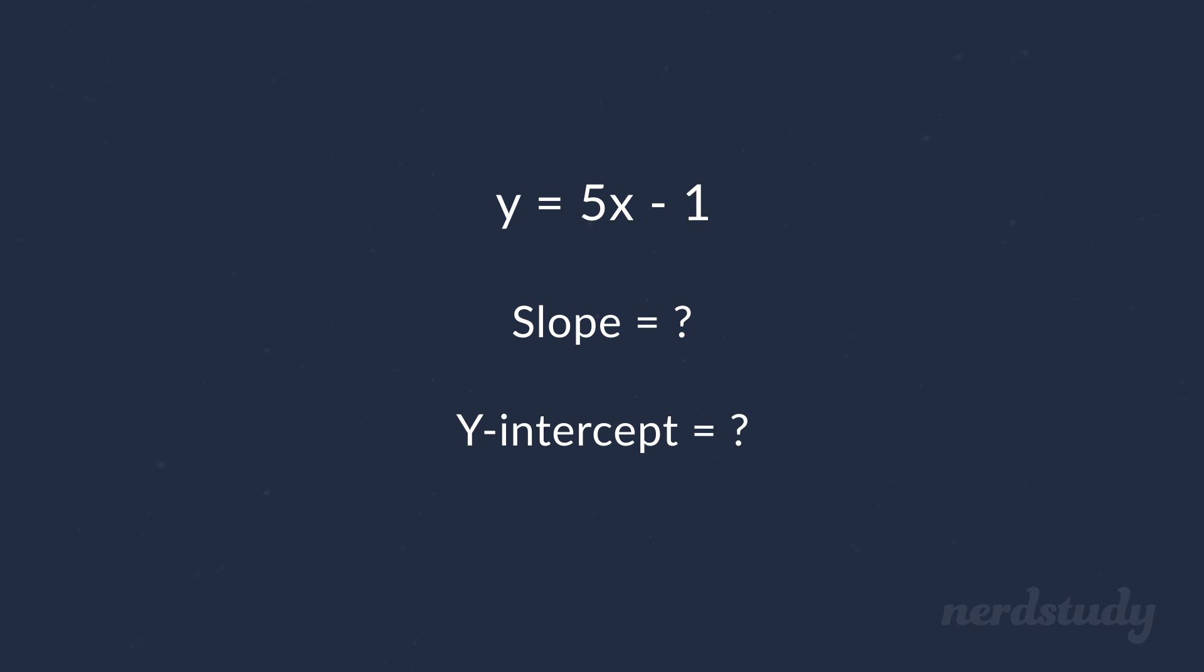Well, remember the slope is the value in front of the x when y is isolated, so that would be 5, and the y-intercept would be negative 1. Good!